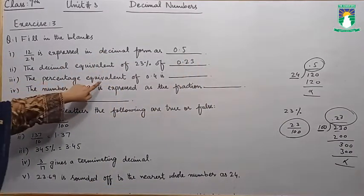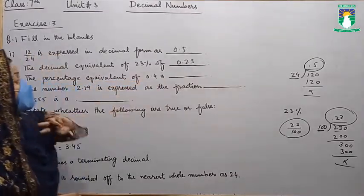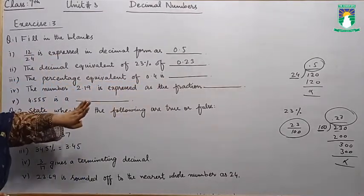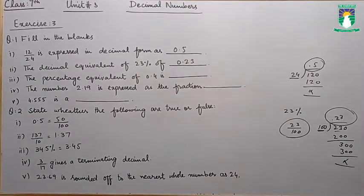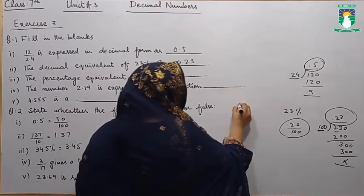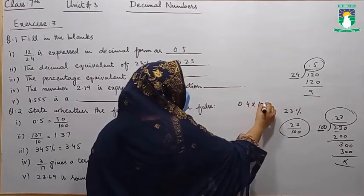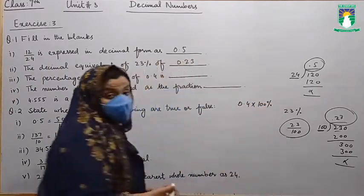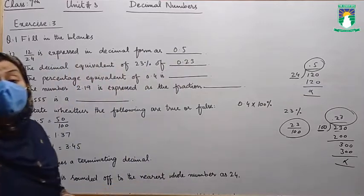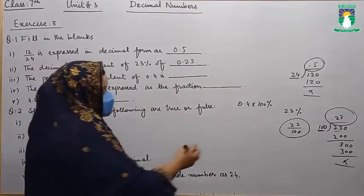The percentage equivalent of 0.4: when you convert 0.4 into percentage, what will it equal? First of all, you have 0.4, and we are going to convert it into percentage. So we will multiply this number by 100%.